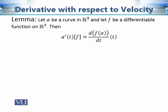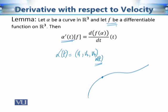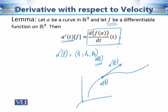The next lemma, stated without proof, concerns the directional derivative. Given a real-valued function f: R³ → R, and a curve alpha(t) with velocity vector alpha'(t) at the point alpha(t), we can consider the directional derivative of f in the direction of alpha'(t) at the point alpha(t). The lemma states that this directional derivative equals the derivative of the composition f∘alpha with respect to t. This result will be used in further discussions.